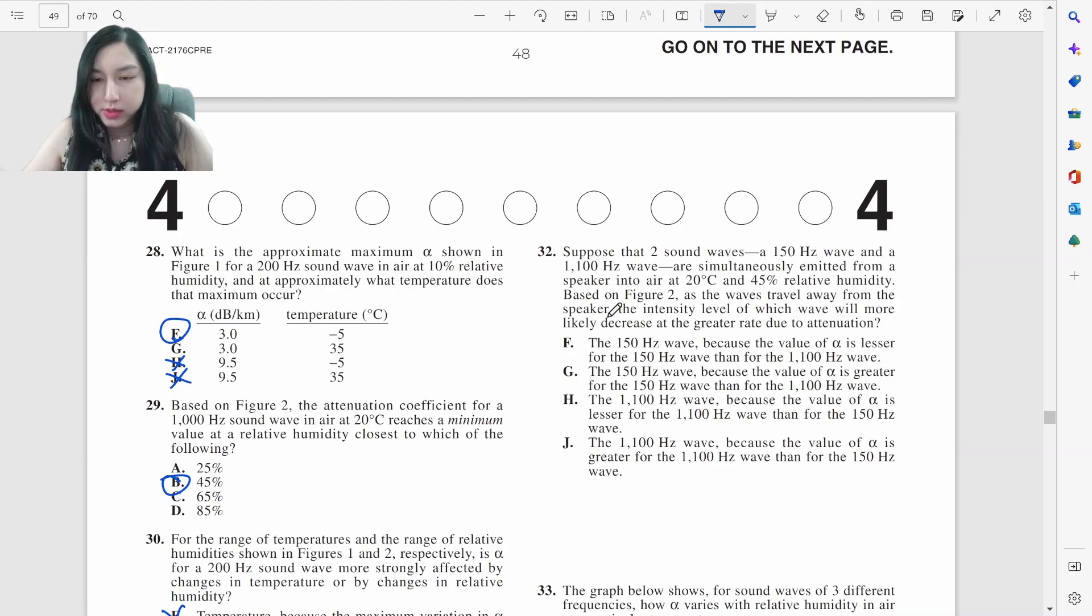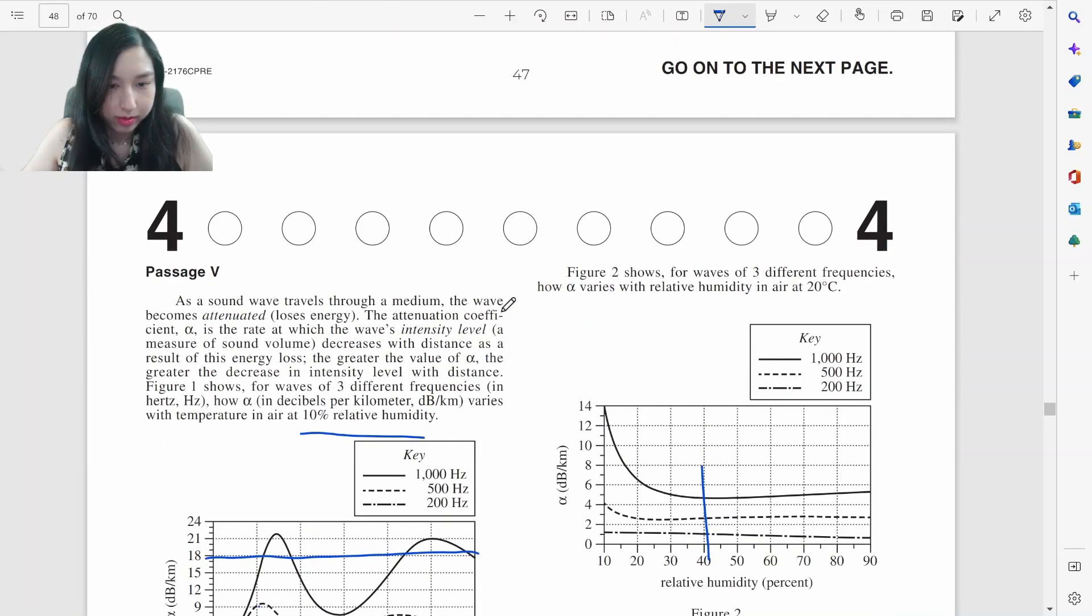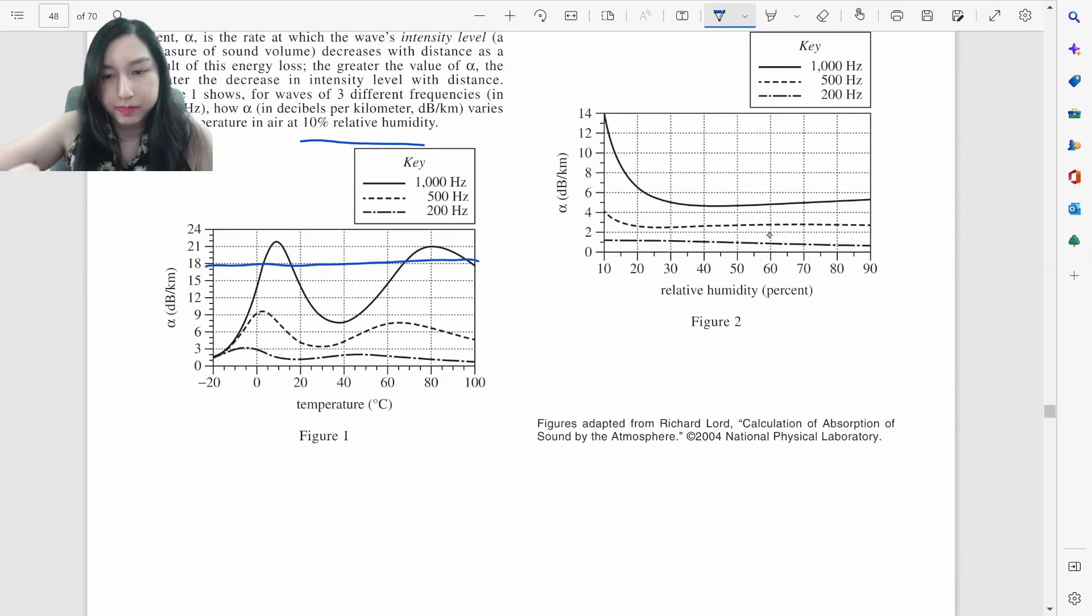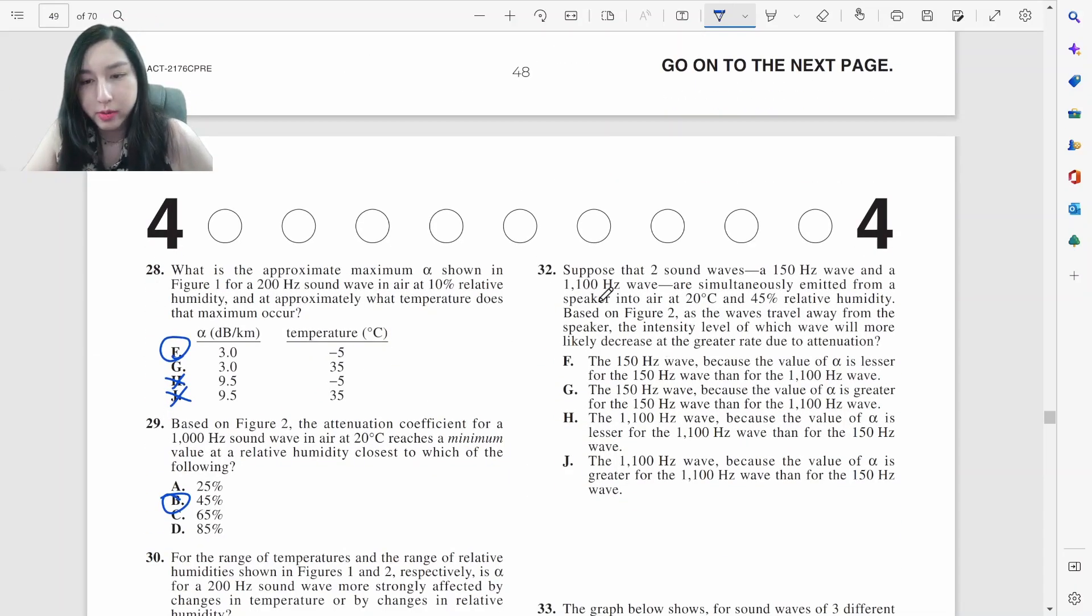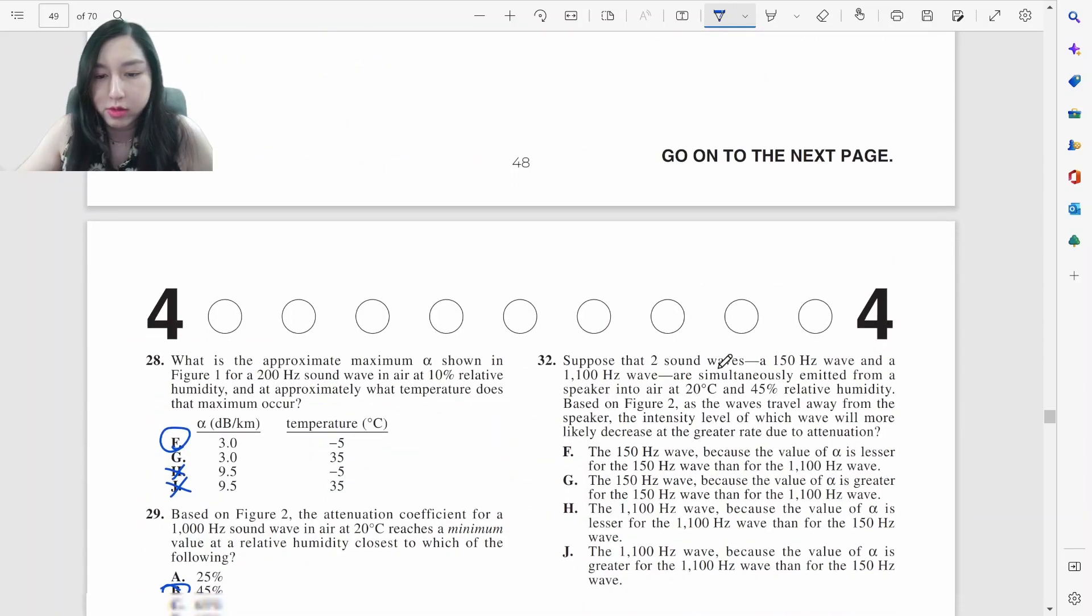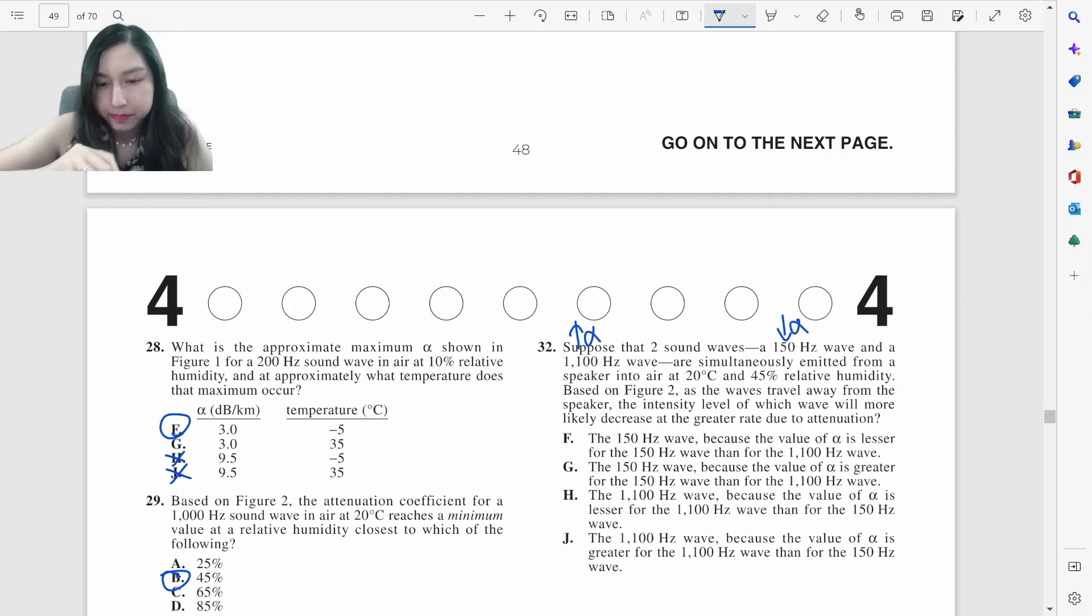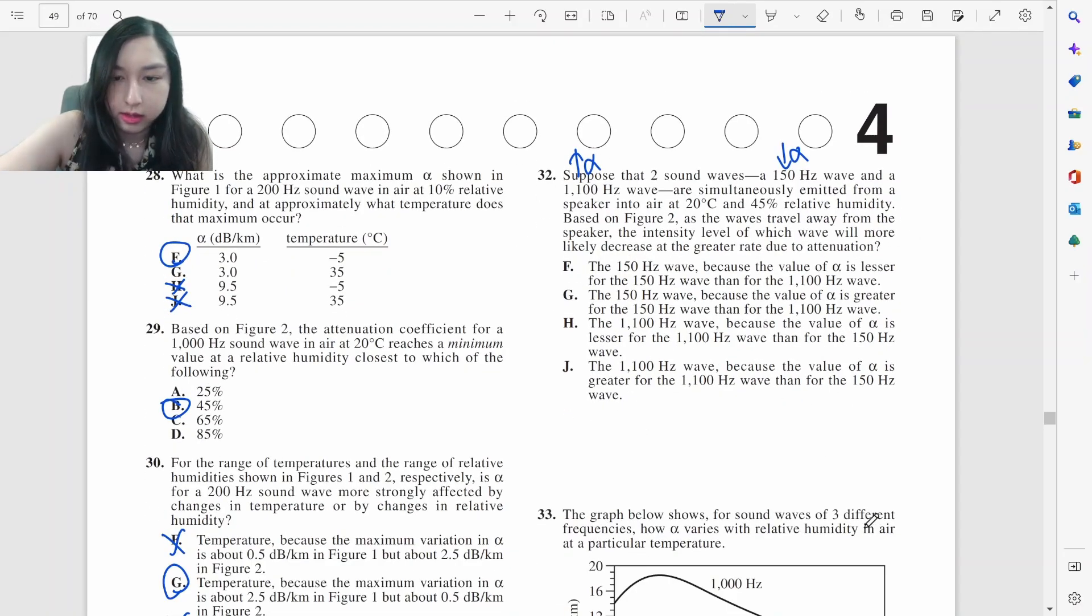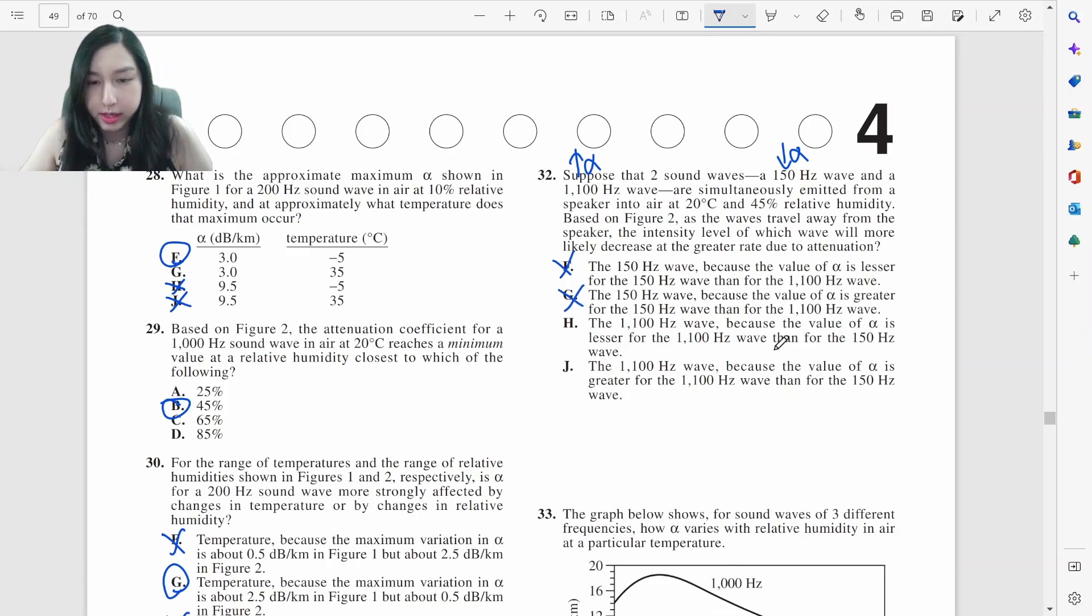Let's look at 32. Two sound waves are simultaneously emitted from the speaker into air. This big figure two, the waves travel the intensity level, which would decrease. What is alpha anyway? Alpha is the rate where the waves intensity level decreases with distance as a result. So basically, larger alpha and then lower intensity. So if I talk about 45% relative humidity, which is about here, for a thousand and 150, then the 1000 would have a higher alpha and the 150 would have a lower alpha. And then this one would decrease more because the alpha is higher. So likely decrease at a greater rate. It's going to be the 1100 one because alpha is greater J.